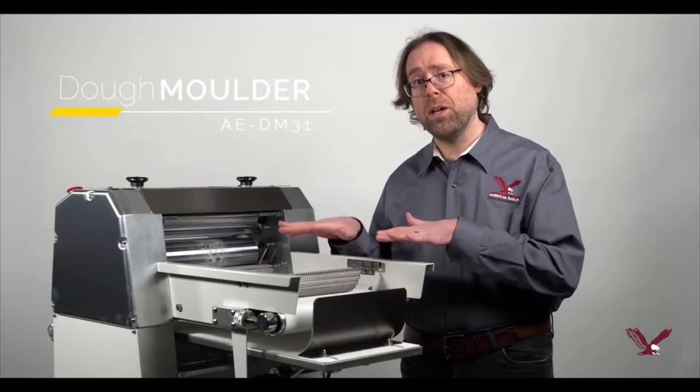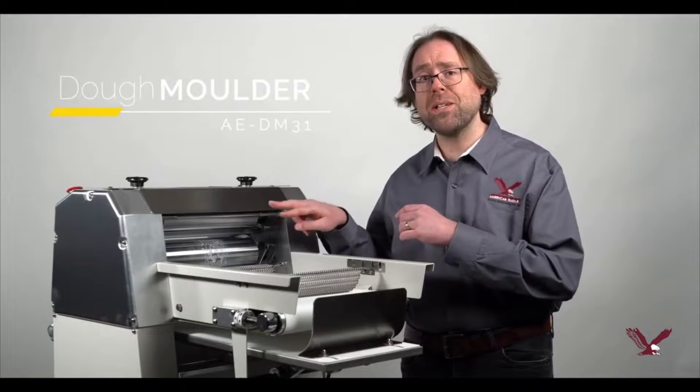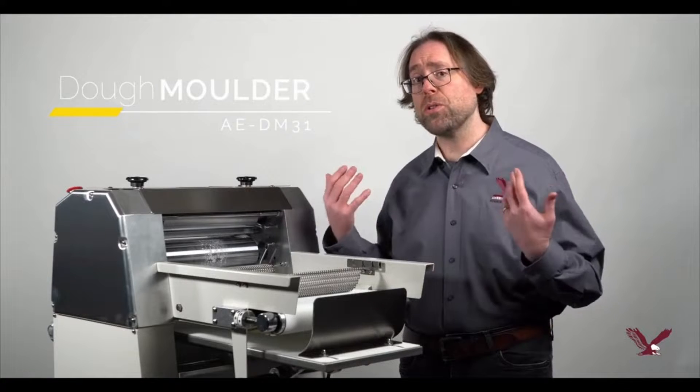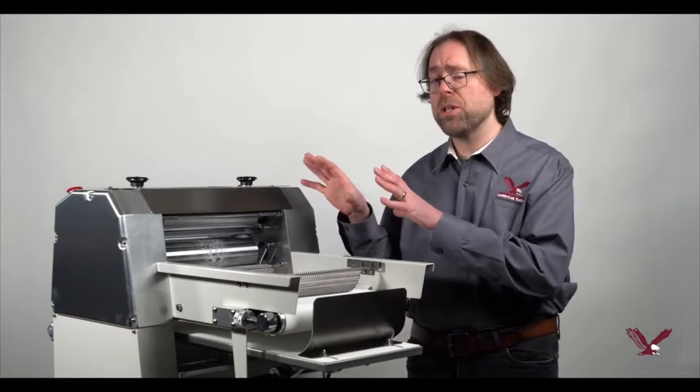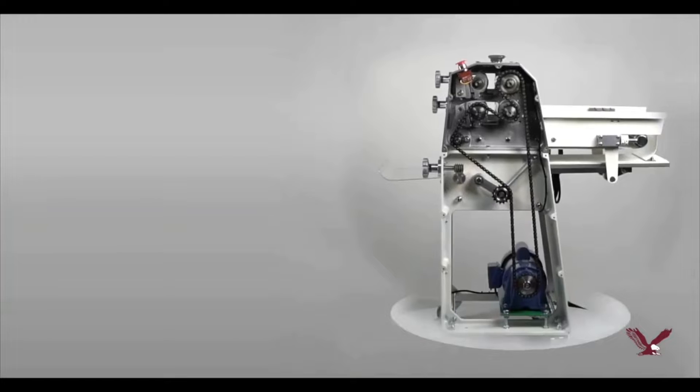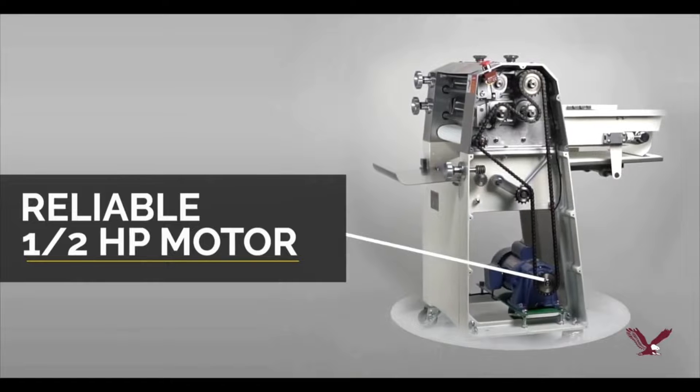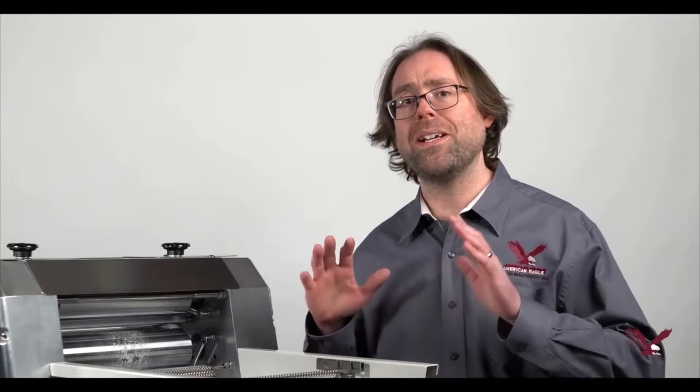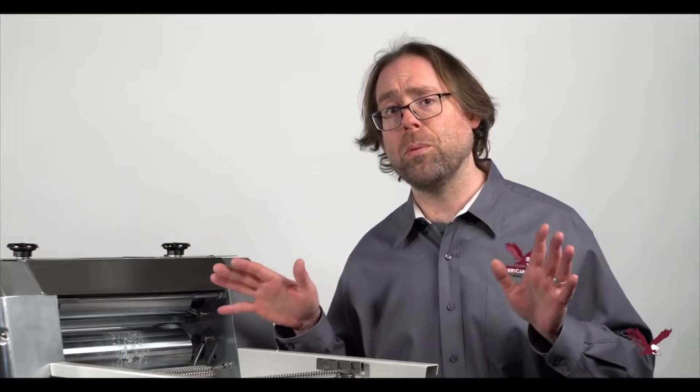The AEDM 31 features two sets of stainless steel rollers to more gradually flatten the dough. It also features a very durable and reliable chain and sprocket drive paired with an extremely reliable half horsepower motor. You can count on the AEDM 31 to provide years of trouble-free operation.